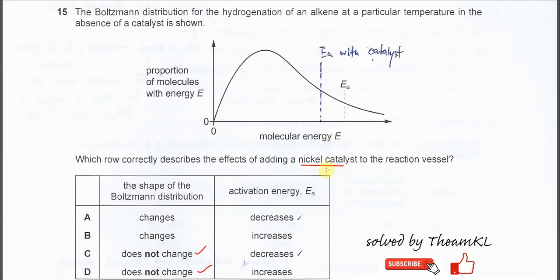We know that the catalyst will lower the Ea. Therefore, when catalyst is added, it will be moved to a lesser or smaller energy. The Ea will move to the left-hand side of the original Ea. So now we have this new Ea catalyst, which is to the left of the existing Ea.